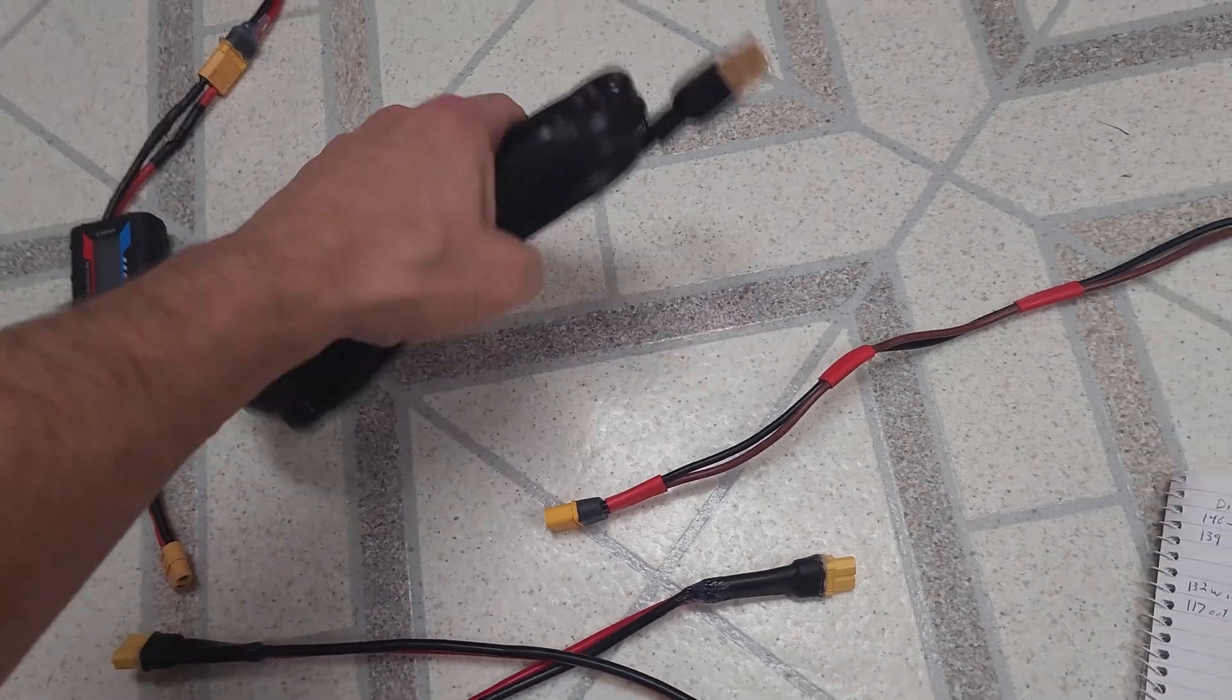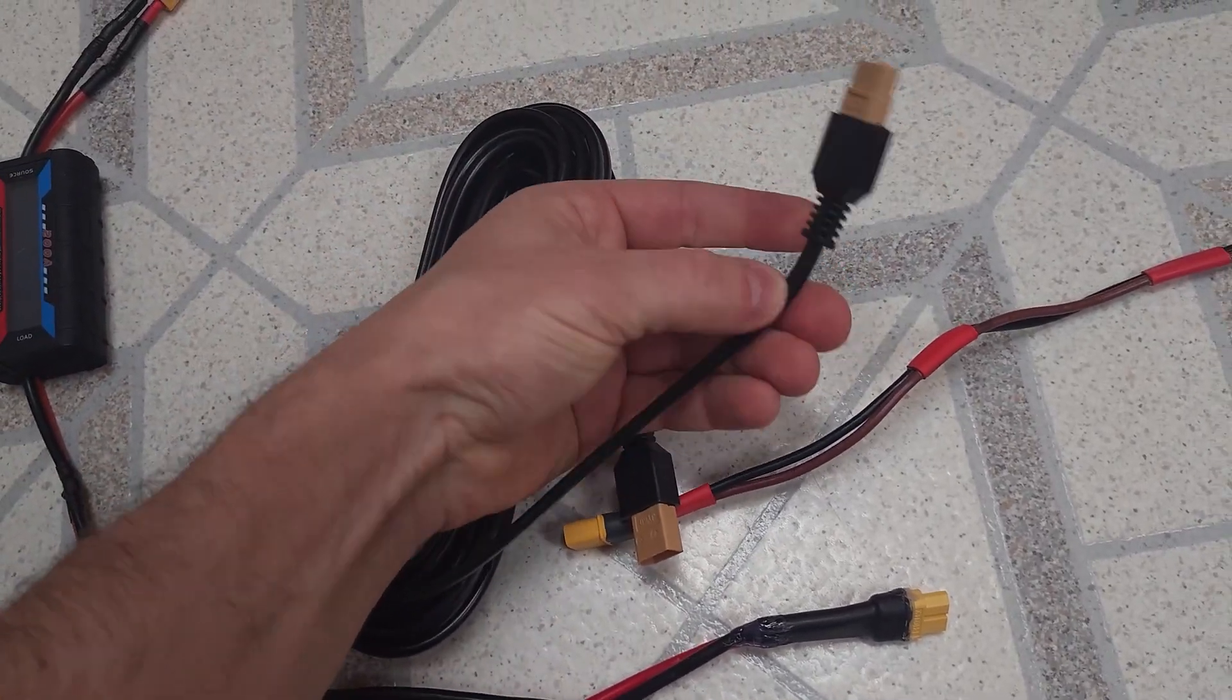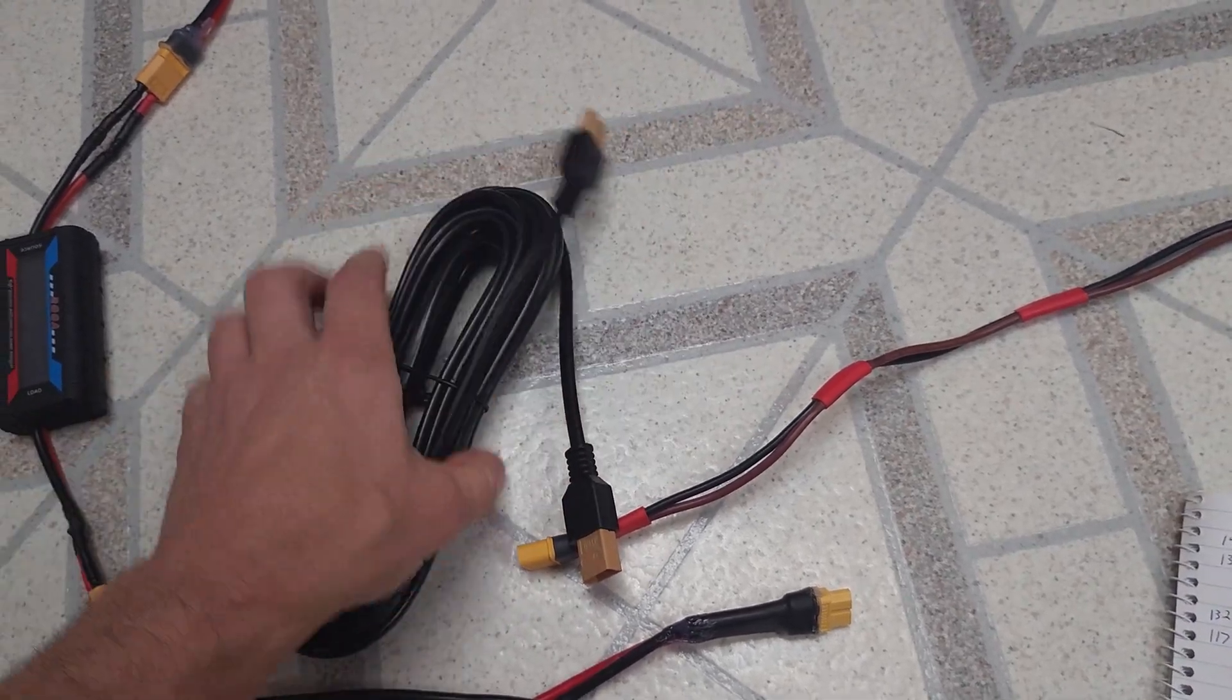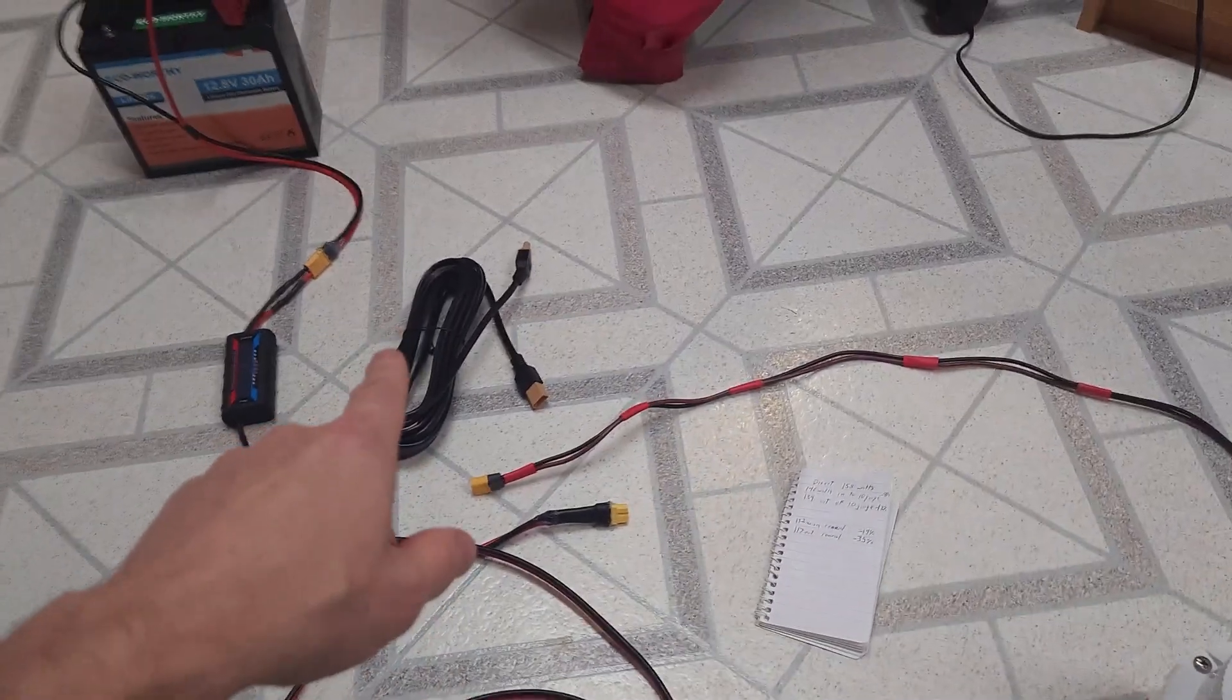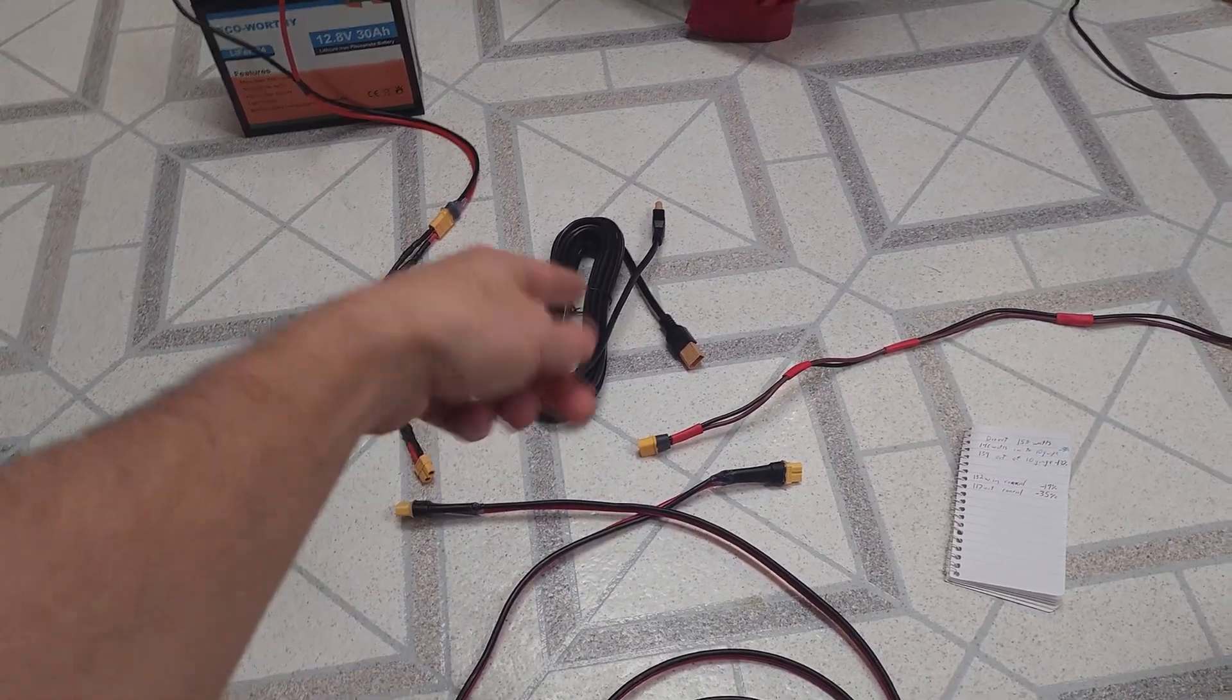Now this cord over here, this is a coaxial cord or it was advertised as one, but it's just a single cord and it's got the same nice XT60 connectors on it. This is just 20 feet instead of 25, but it didn't list what gauge cable that was, so I wanted to test it out because it's nice convenient cable.